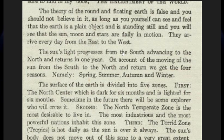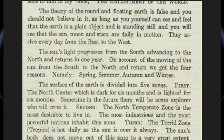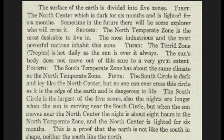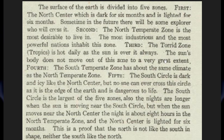The key says the sun and stars arrive every day from the east to the west, and the sunlight progresses from the south advancing to the north and returns in one year. A lot of this is basic stuff, which he says creates your seasons — spring, summer, autumn, and winter. But here's where the map really shines: he's dividing the surface of the earth into five different zones.